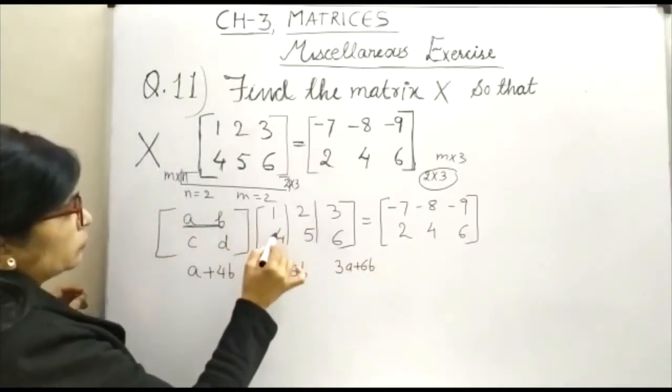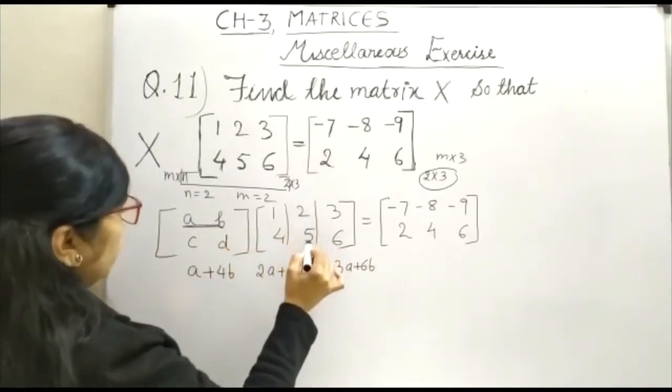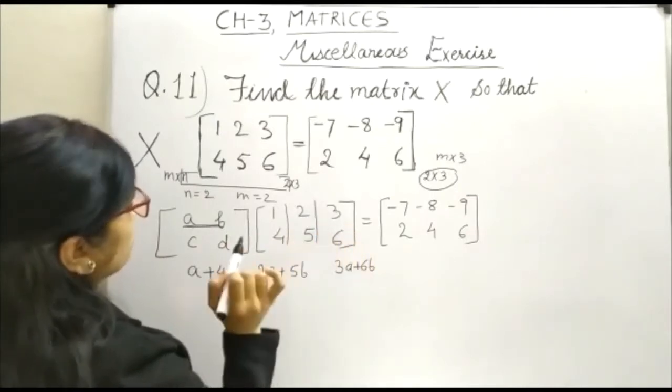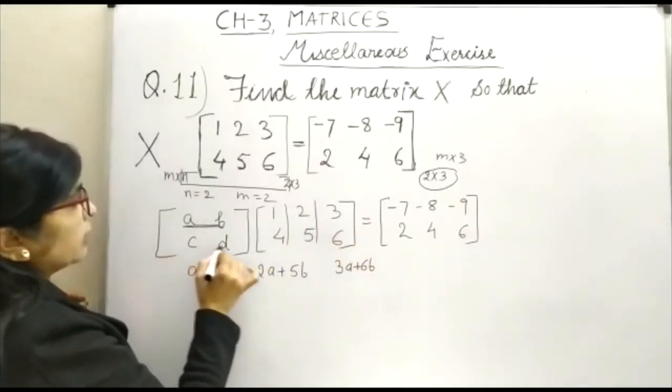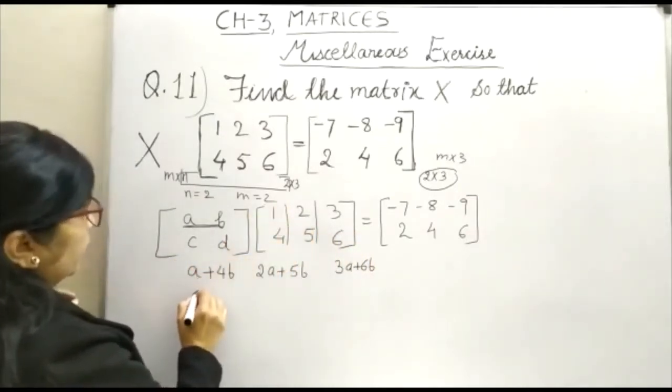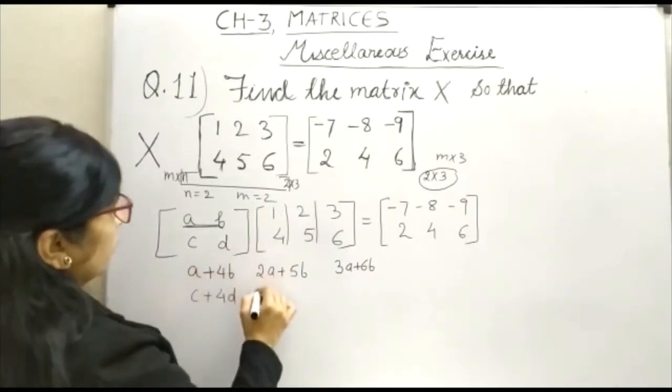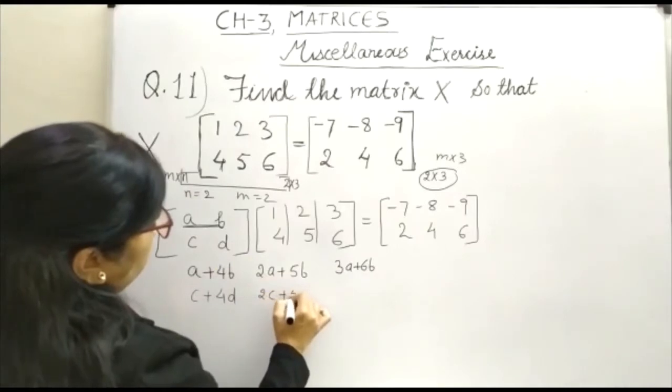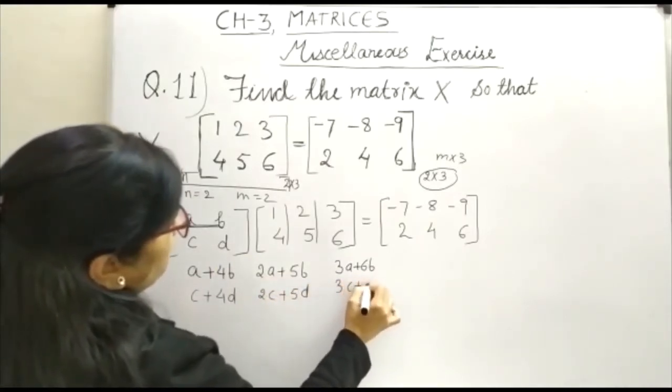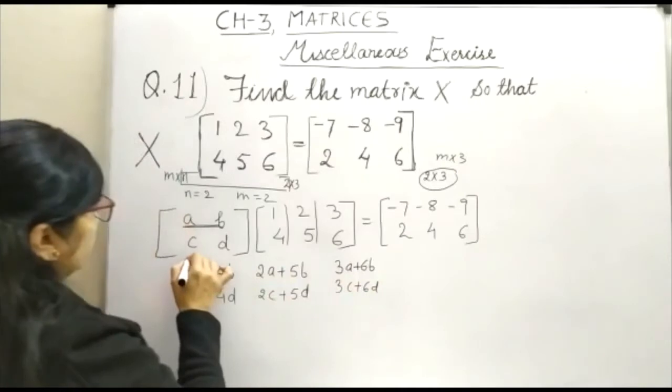Once again, we will check it. A plus 4B, 2A plus 5B and 3A plus 6B. Similarly, second row, first column, that is C plus 4D, then 2C plus 5D, then 2C plus 5D and 3C plus 6D.